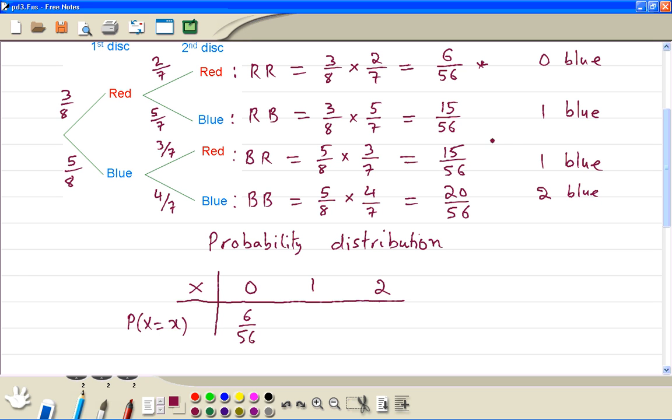For 1 blue, so it's these 2 possible outcomes. We add the probabilities, 15 plus 15, so it's 30 out of 56. For 2, just 20 out of 56.